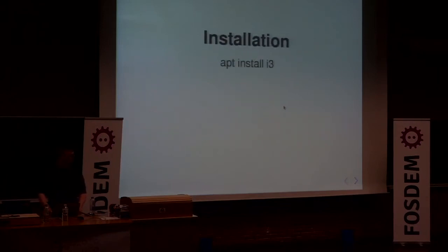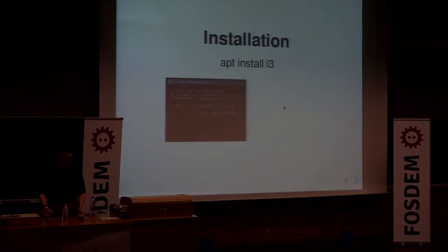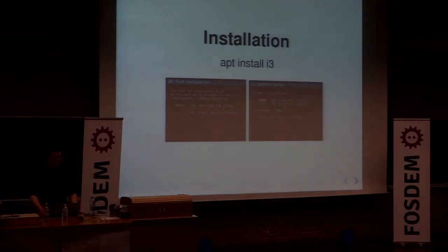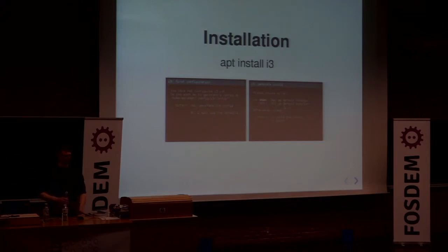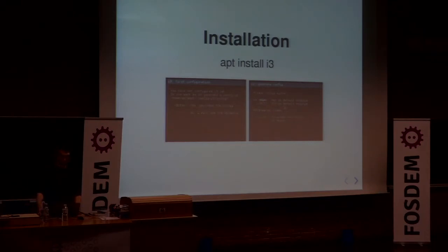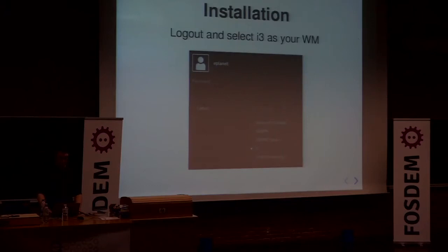How do you install it? You install the package. You get this first screen where, the first time you generate your configuration, it's a basic configuration that comes with all the default bindings, and it asks you for the mod key you want to use. The mod key is the very important concept in i3 — it gives you the shortcuts you'll use to control i3. Usually you want to use the window key. Then you log out and select i3 as your window manager.